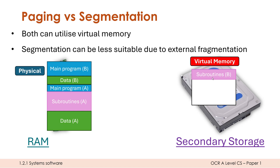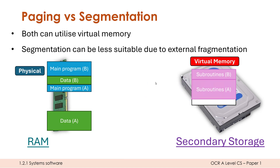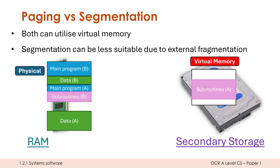Let's say we've already got some subroutines for program B in virtual memory, and the main program of program B is calling a subroutine in that segment. That means I need to move this segment back into physical RAM so the CPU can execute that subroutine. Same process as with paging, except with segments: I move a segment across into virtual memory — ideally one which hasn't been used in a while, like the other subroutines segment — and move the needed subroutines back into physical RAM. The concept is still sound, but it creates external fragmentation because segments are almost always different sizes.